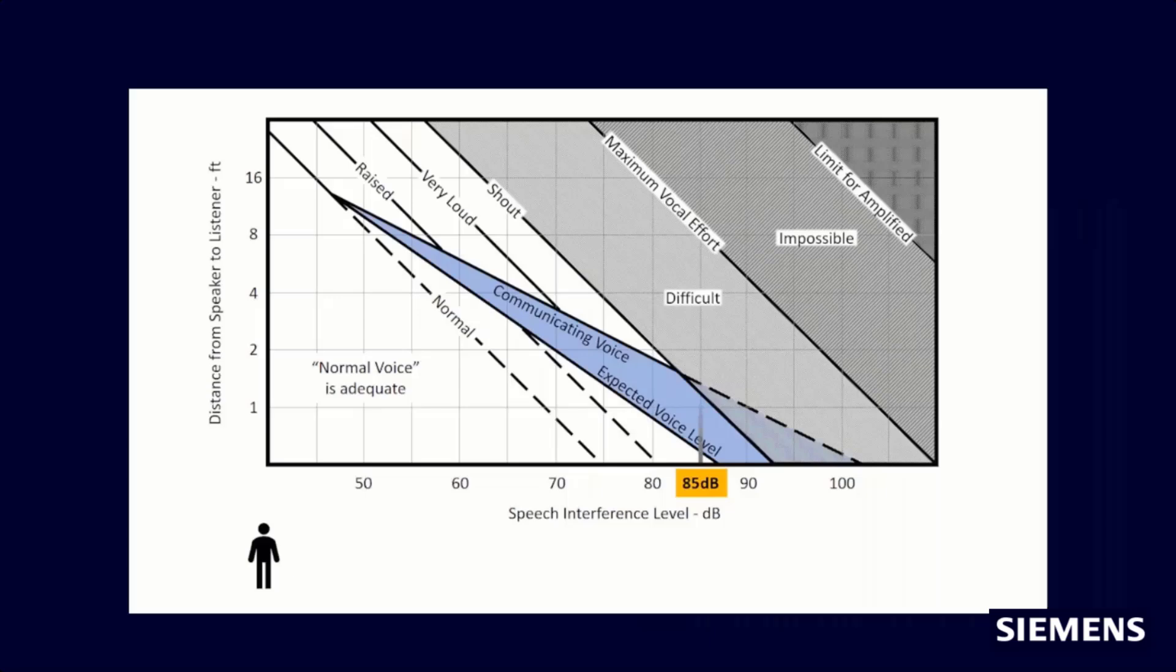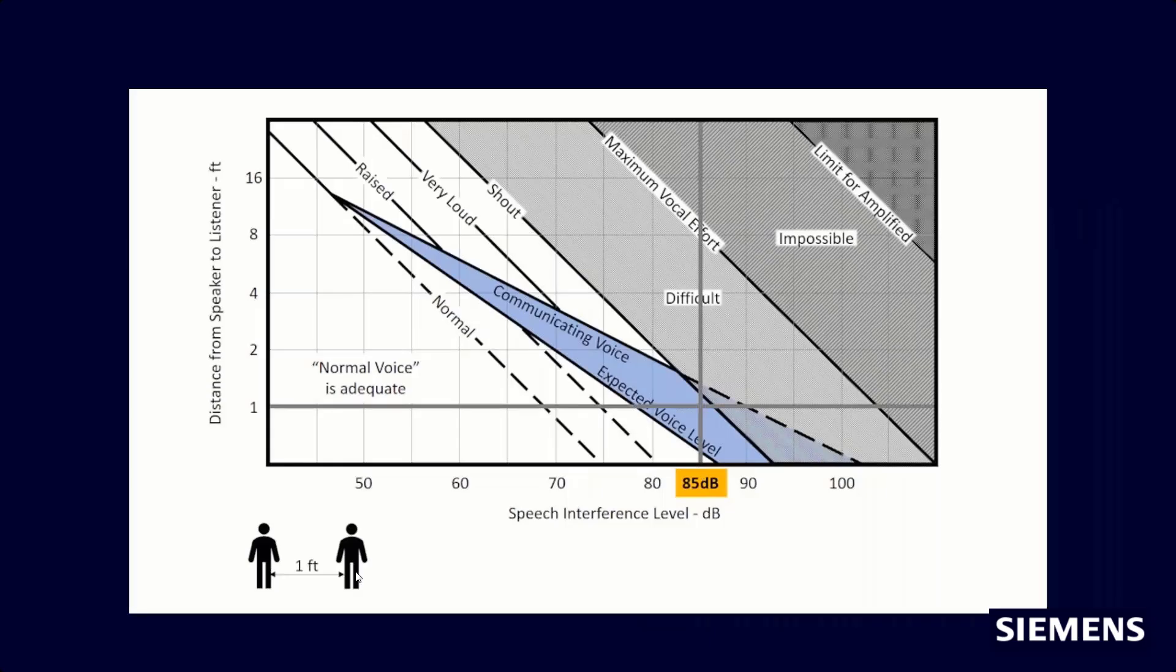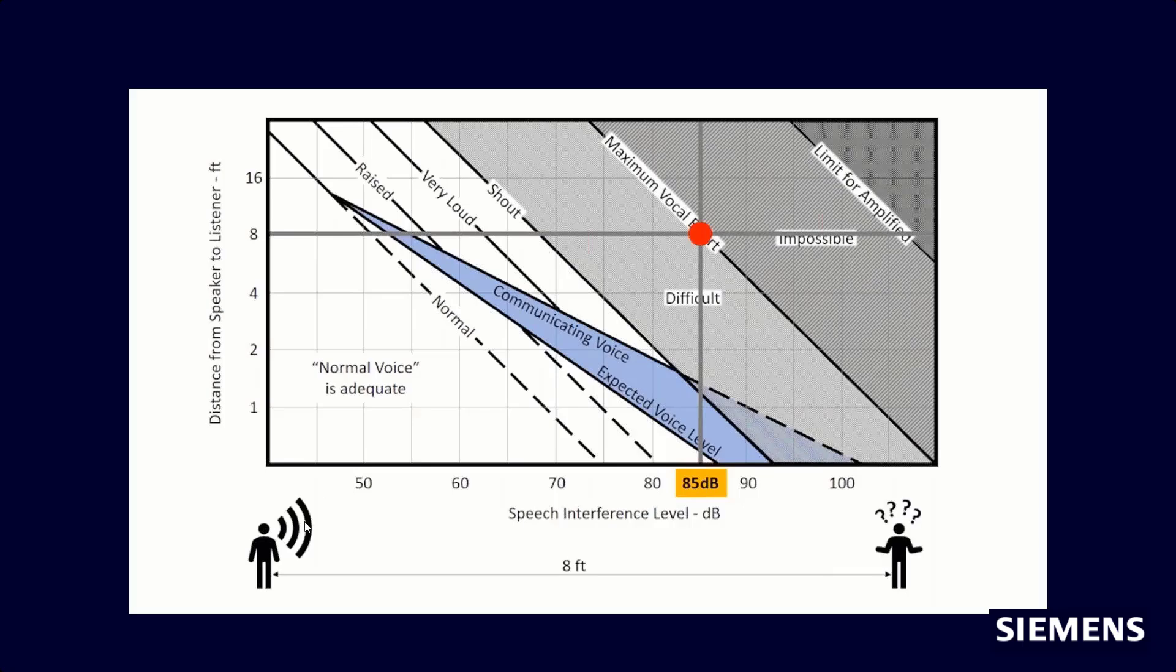Quick example. I have a background level that's 85 dB. I have a friend who's only one foot apart. If I'm eight feet apart, I'm in the expected voice level of communicating, I should have no problems. If I have that same sound level and I am eight feet apart, I am in the maximum vocal effort and I will probably be screaming and there will probably be a lot of information that's lost between those.